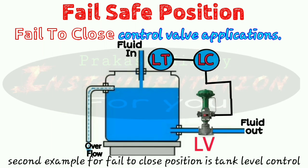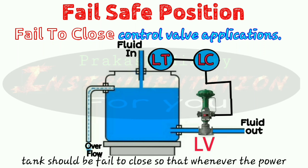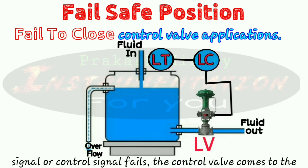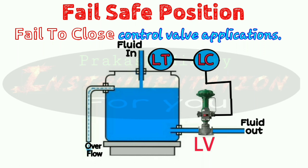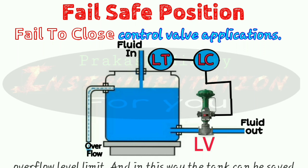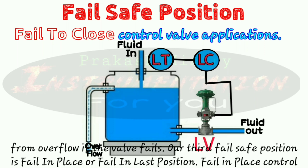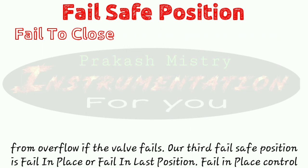Our second example for fail to close position is a tank level control valve. The control valve that controls the level of the tank should be fail to close, so that whenever the power signal or control signal fails, the control valve comes to the fully closed position. Then the tank level remains below the overflow limit, and in this way the tank can be saved from overflow if the valve fails.